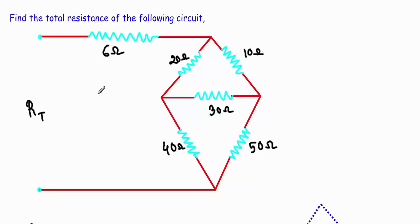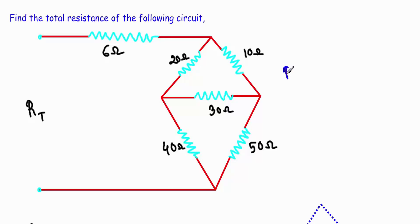Here is another example of Delta and Y transformation. In this video I will show you how to solve this example for calculating total resistance or equivalent resistance RT in case of this circuit. This type of circuit is known as a Wheatstone bridge type structure.